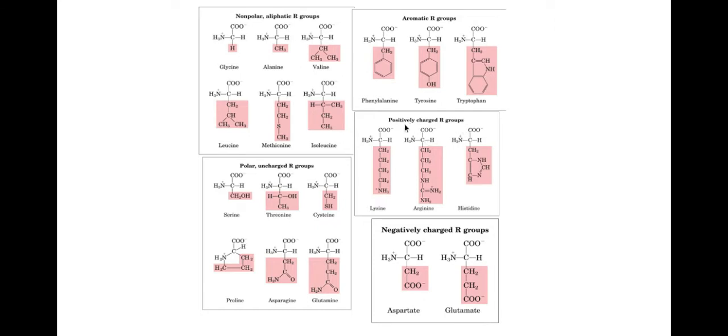So for example this group here they have positively charged R groups so they give them a positive charge whereas here we have negatively charged R groups. So between these two different R groups I can actually create an ionic bond and that becomes very important when we look at protein structure a little bit more.